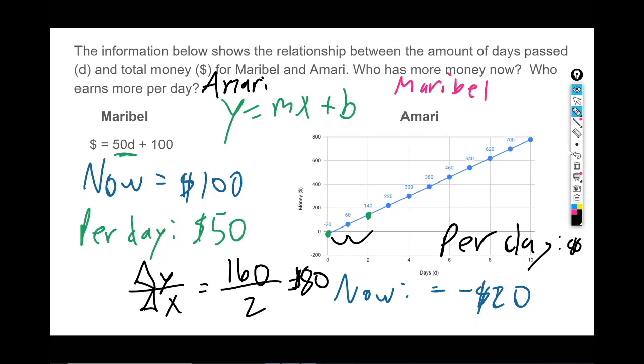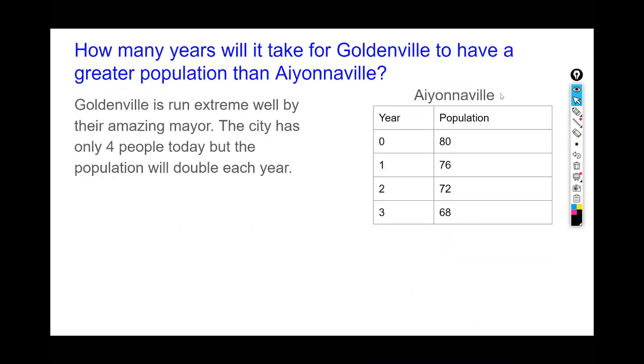Let's go to the next example. We'll do one more example together. It says how many years will it take for Goldenville to have a greater population than Aiyonnaville? We have two towns here—two cities. Goldenville seems like a great town, run extremely well by their amazing mayor. The city only has four people today, and the population will double each year.